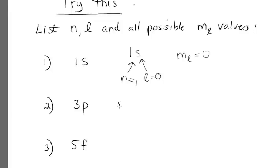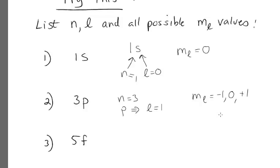For the 3p, n equals three. The p means that l equals one, and when l equals one, m sub l has three possible values.